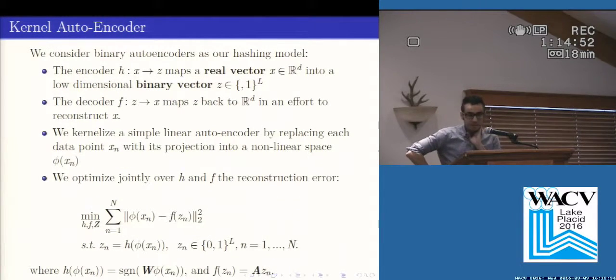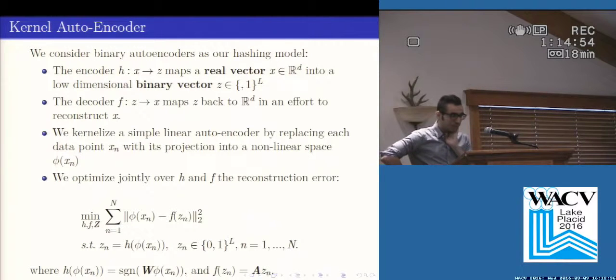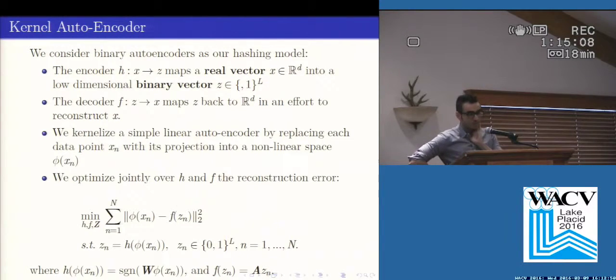The main idea is very simple. We use a single autoencoder with two modifications. First, we modified the encoder part. So in standard autoencoder models, the encoder part just maps the real observation to real output. But for our hashing method, we use the binary output.